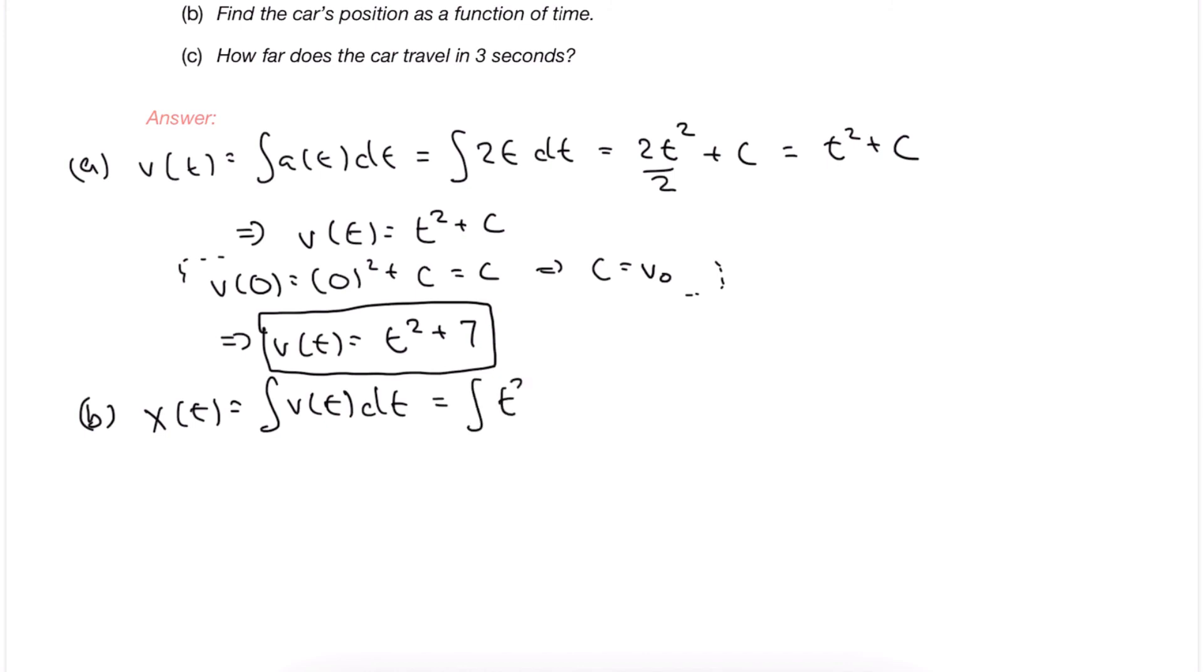We write that out here. Now it's just a matter of taking the anti-derivative term by term, which for polynomials means we bump up the degree of the term and then divide by that degree. That gives us also a constant, which now we know is simply the initial position x0.